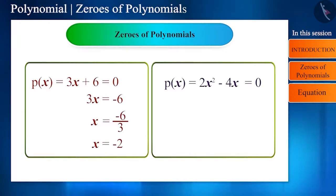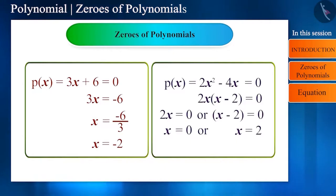Similarly, on solving the second polynomial, we will get x = 0 or x = 2. The zero of a polynomial can also be zero, but it is not always necessary to be zero.